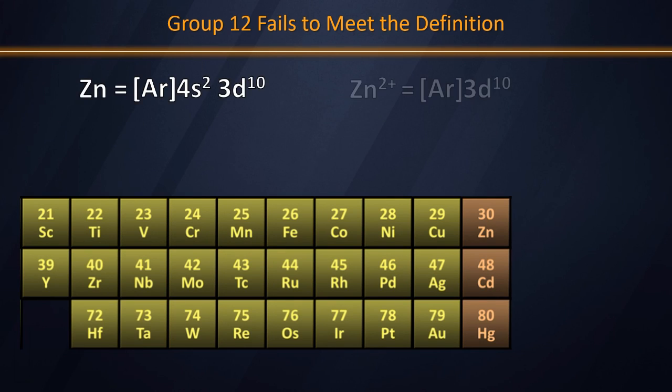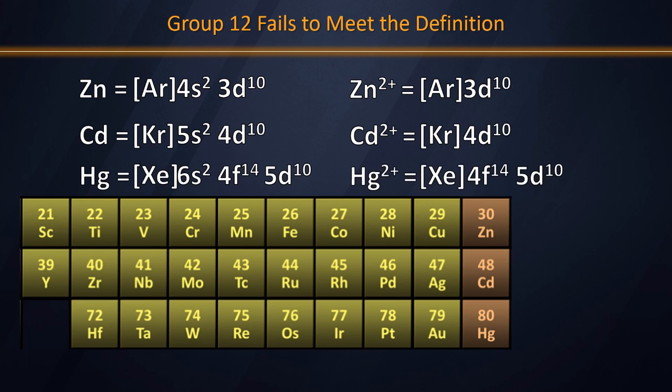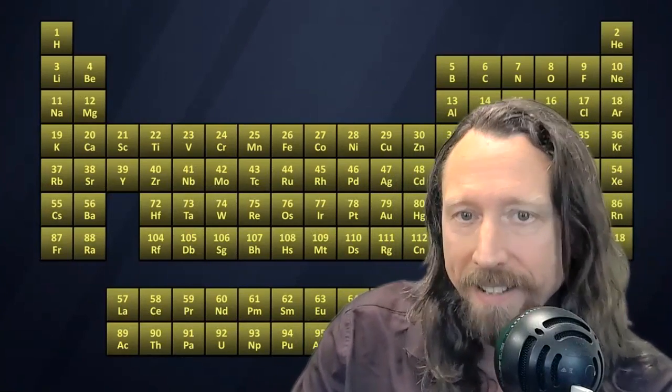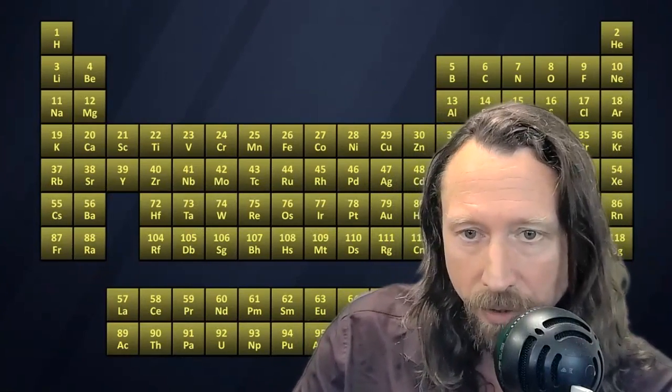Why would zinc, cadmium, and mercury not be transition elements? If we think about the common ions and the ground state electron configurations of neutral atoms of these elements, we find that zinc, cadmium, and mercury only form plus two ions. These plus two ions form when electrons are lost from the 6s, 5s, or 4s subshell for these elements. That means that D subshell is completely closed off. It's not acting as a part of the element's chemistry. It's a closed off kernel of electrons that does not participate in the chemistry of the element.